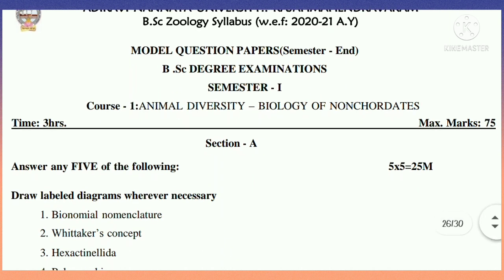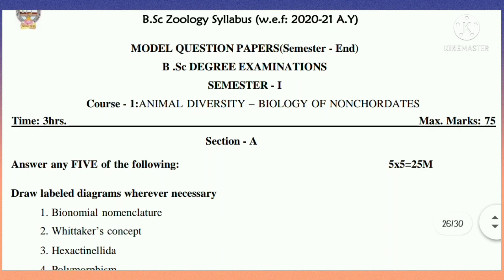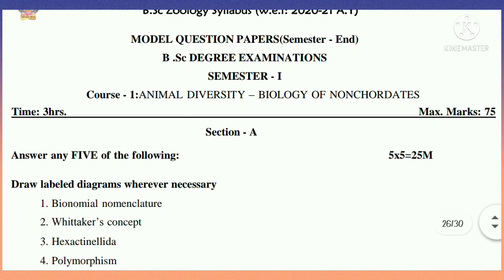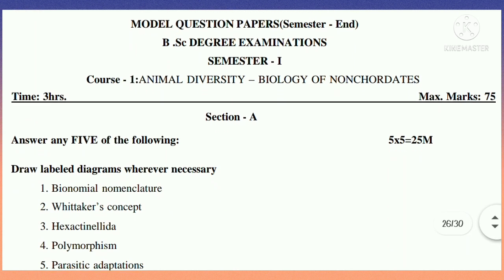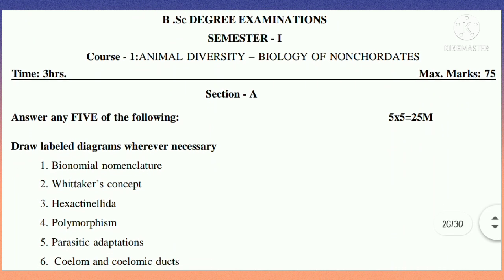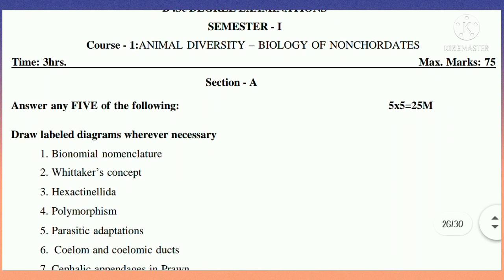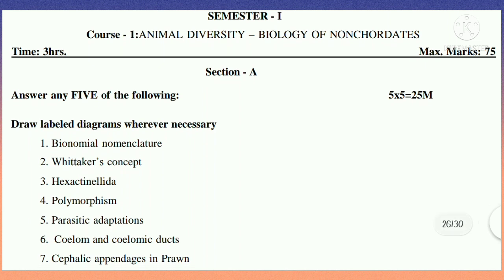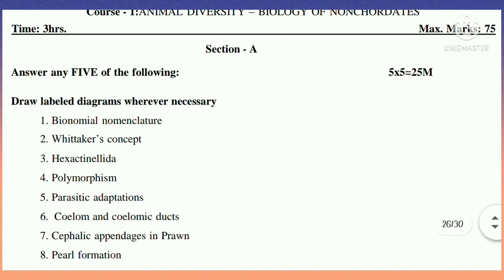So first, these are the short questions: Binomial Nomenclature, Whittaker's Concept, Hexactinellida, Polymorphism, Parasitic Adaptations, Coelom and Coelomic Depths, Cephalic Appendages in Prawn, and Pearl Formation. I have made a separate video with answers, so the link is in the description — make sure to check that video also.